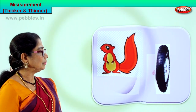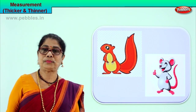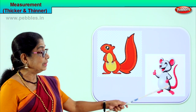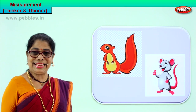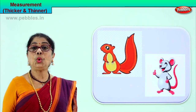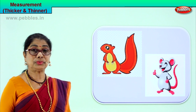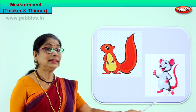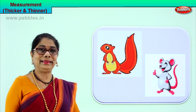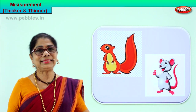See what we have here? You have two animals — a squirrel and a mouse. Look at their tails. The mouse has a thin, long tail and the squirrel has a thick tail. When we compare the two tails, we say the squirrel has a thicker tail than the mouse. Or, the mouse has a thinner tail than the squirrel. Thicker tail, thinner tail. Now you understand what is thinner and thicker.